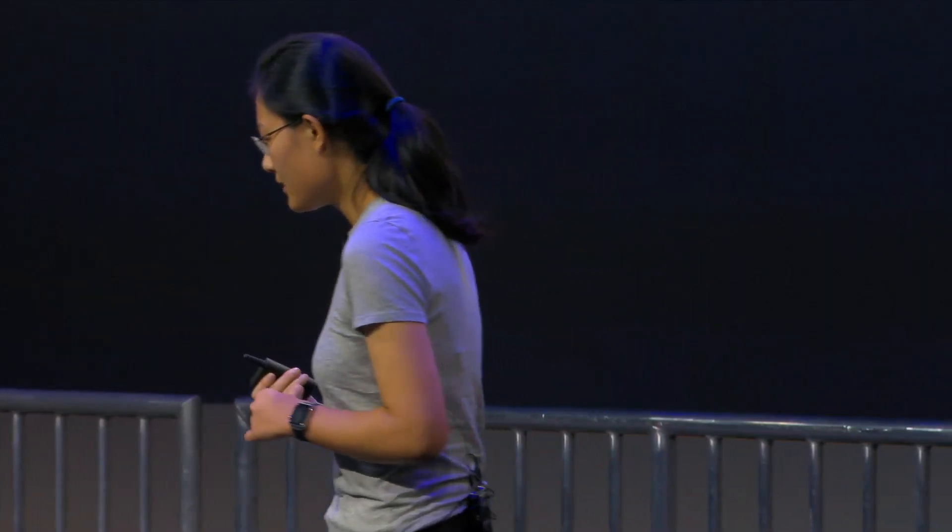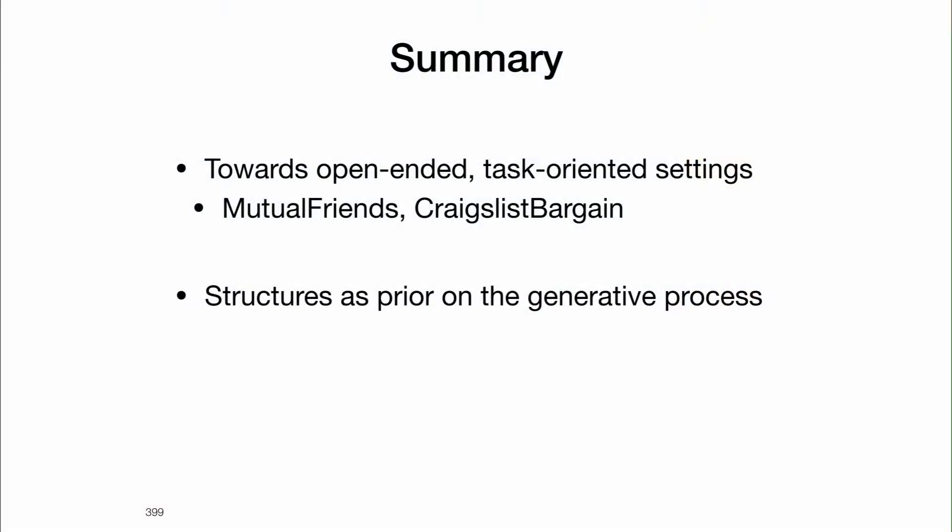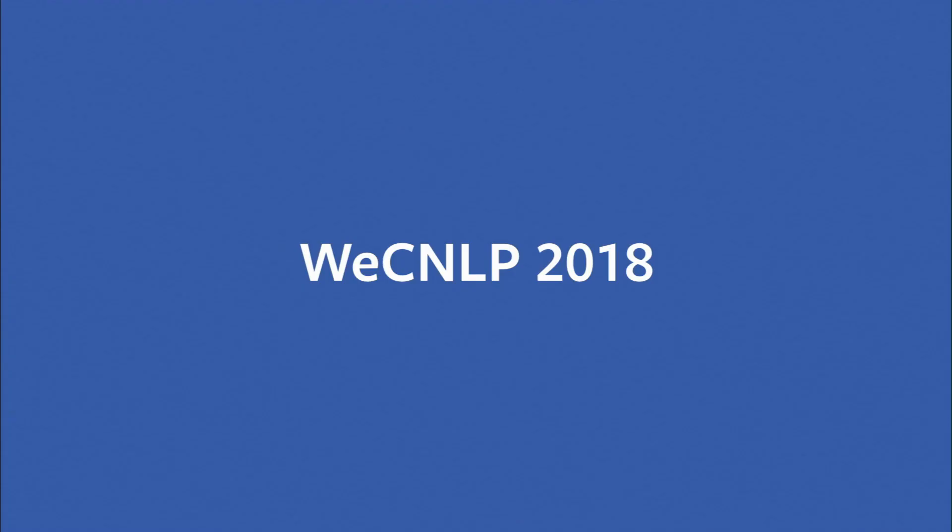As a summary, I've talked about our work towards building more open-ended task-oriented systems, introducing the mutual friends dialogue task and the Craigslist bargaining task. One key lesson is that for problems like text generation or dialogue — where given one input there are many possible correct outputs — it's really important to include structure to encode our prior on the generative process, which makes our model more robust. All the code and data can be found on the link provided. Thank you. Any questions?